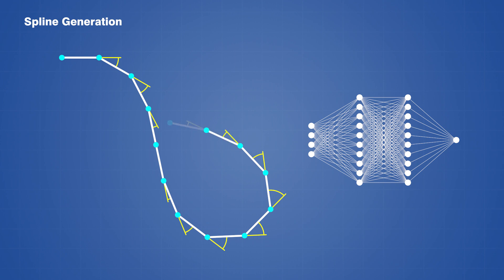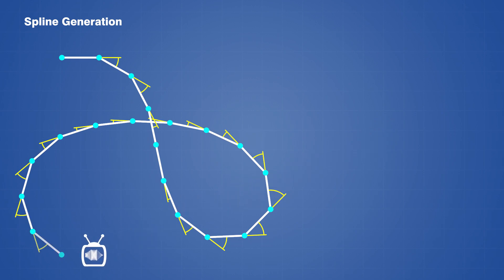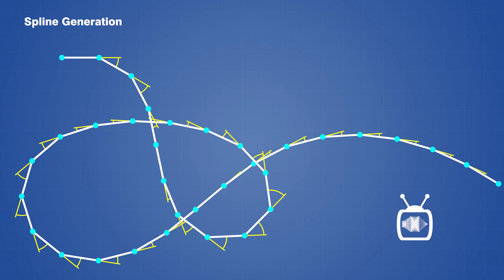In order to automate this, the spline generation sequence is coded into an algorithm that is executed by a bot, where the neural network essentially acts as the bot's brain. Its behavior is determined by the weight and bias values contained within the neural network, and it will make different decisions that result in different spline shapes depending on how these values are changed.